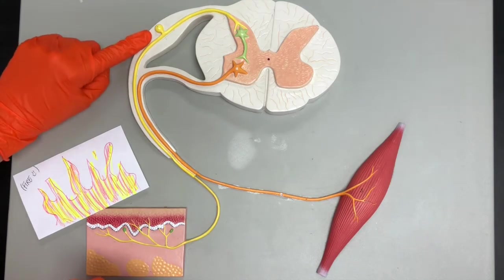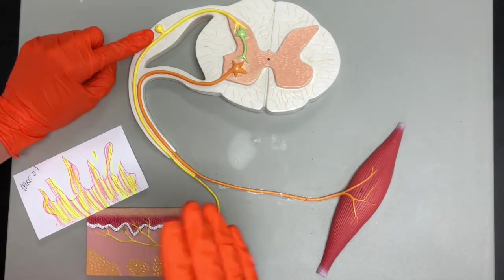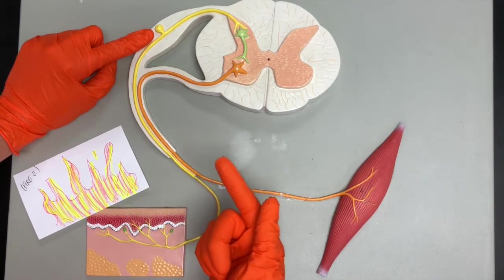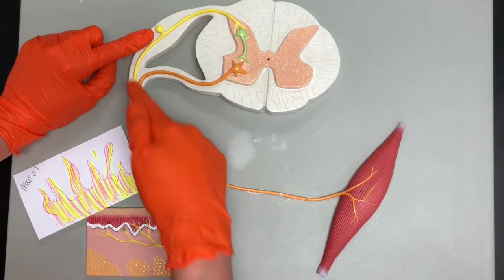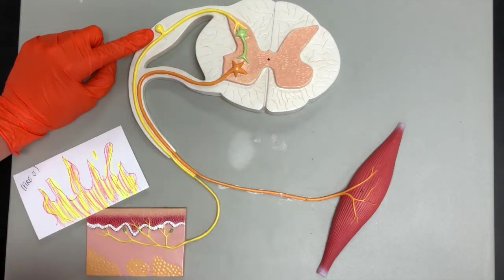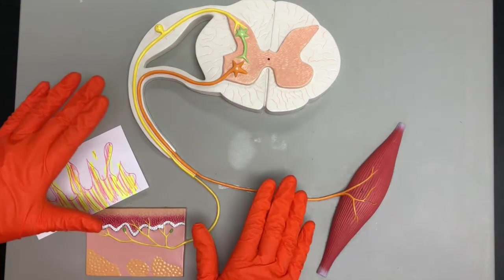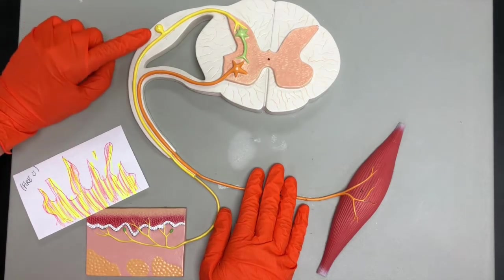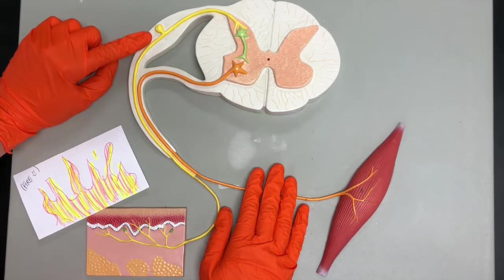A sensory neuron. And sensory and afferent describe the functional classification. What job is it doing? It is sending sensory information to the central nervous system. Let's remind ourselves what the structural classification is then. A sensory neuron or afferent or a-ferent neuron.